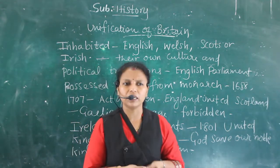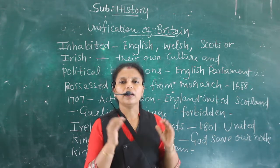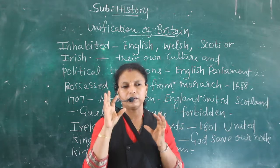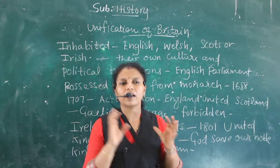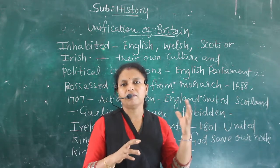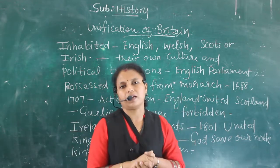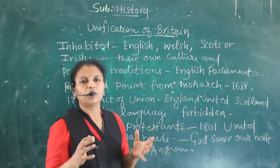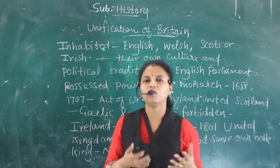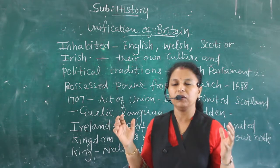So it was inhabited by English, Welsh, Scots, and Irish people. England was one state, Scotland was another, and Ireland was yet another. They were separated into various different states. England wanted to make it unified — to create a United Kingdom through the Unification of England.